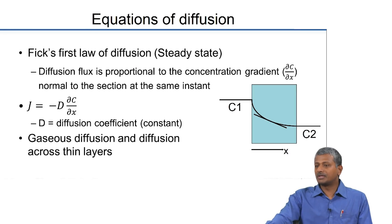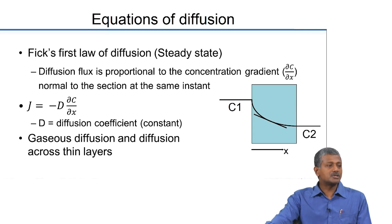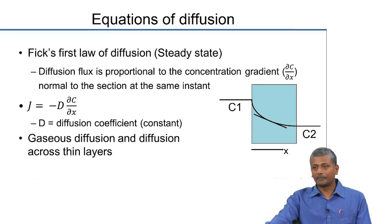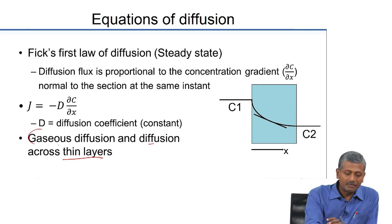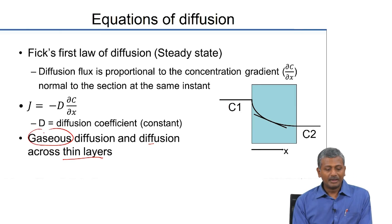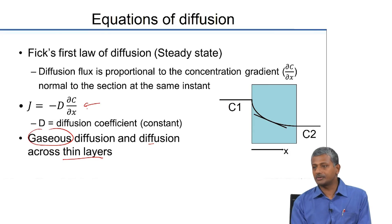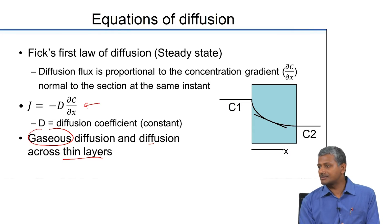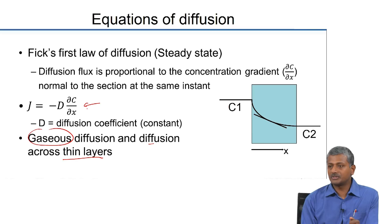We also talked about two different cases. One is steady-state diffusion where the properties of the material do not change with respect to time — the concentration gradient and its variation across the depth of the material remain the same. This is applicable to very thin layers, especially when gaseous diffusion is happening. This is defined by Fick's first law of diffusion, where the diffusion flux J is related to the concentration gradient through a proportionality constant — the diffusion coefficient D.